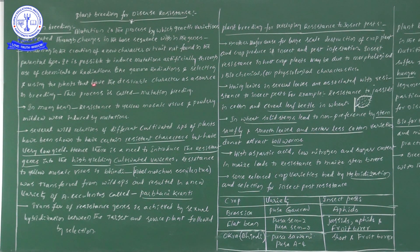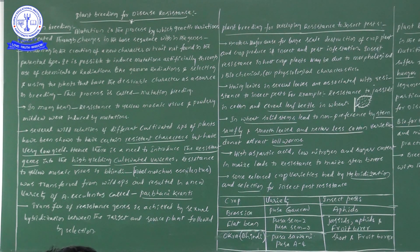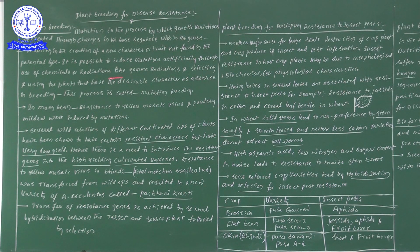It is possible to induce mutations artificially through the use of chemicals or radiations like gamma radiations. We can bring mutations by two different types of ways: one is by using chemicals and the other is by using radiations. After completing mutations, selecting and using the plants that have desirable characters as a source in breeding — this process is known as mutational breeding.